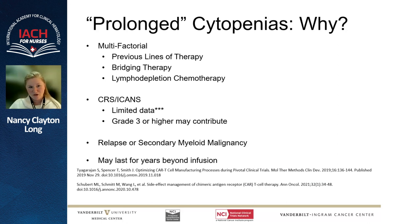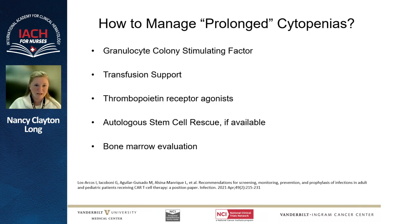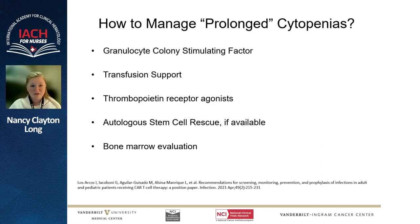One thing we often see in our long-term CAR-T clinic is prolonged cytopenias. The cause is multifactorial — our case study patient had five lines of therapy; some patients receive bridging therapy between collection and cell availability, which can take two to three weeks; then we give chemotherapy prior to cell infusion. CRS and ICANS of grade three or higher may also contribute. Always consider whether this could be relapse or secondary malignancy, as this can last years beyond infusion. Anecdotally, we've had patients receiving supportive care for years post-CAR-T. Management includes growth factor, transfusion support, possible stem cell rescue if cells are stored, and bone marrow evaluation to rule out secondary malignancy.